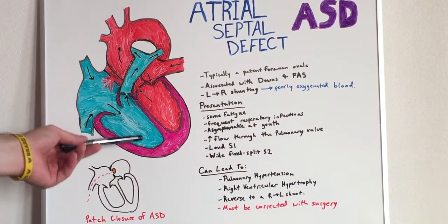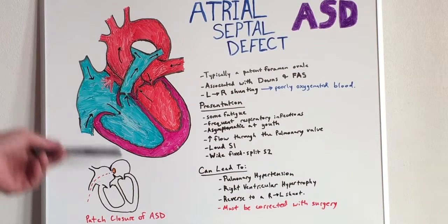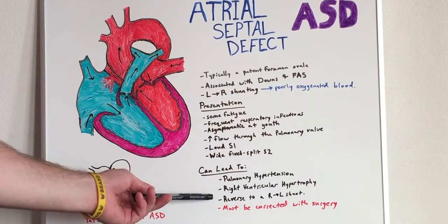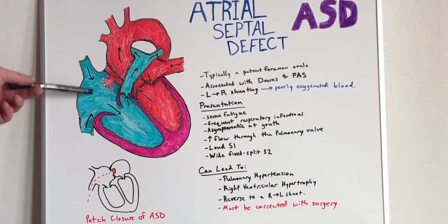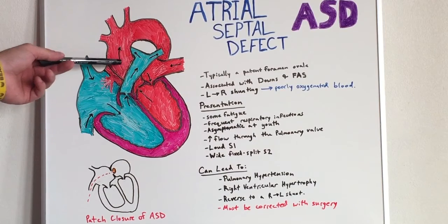If it gets bad enough and there is sufficient blood backing up in the right ventricle and right atrium, there may actually be a reversal of shunting — from left-to-right shunting to right-to-left shunting.